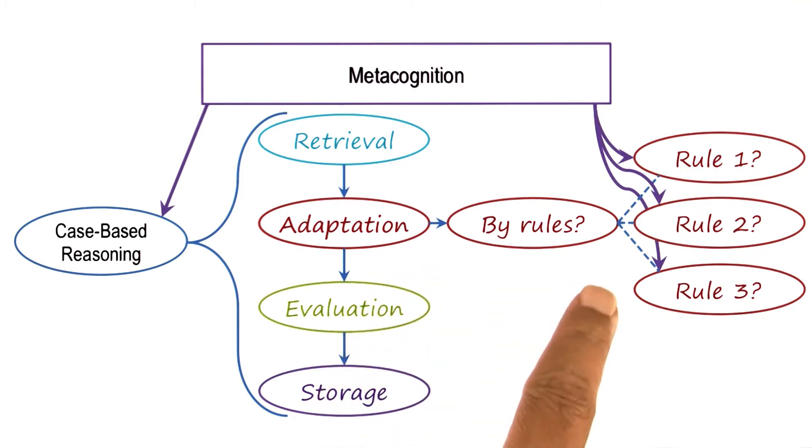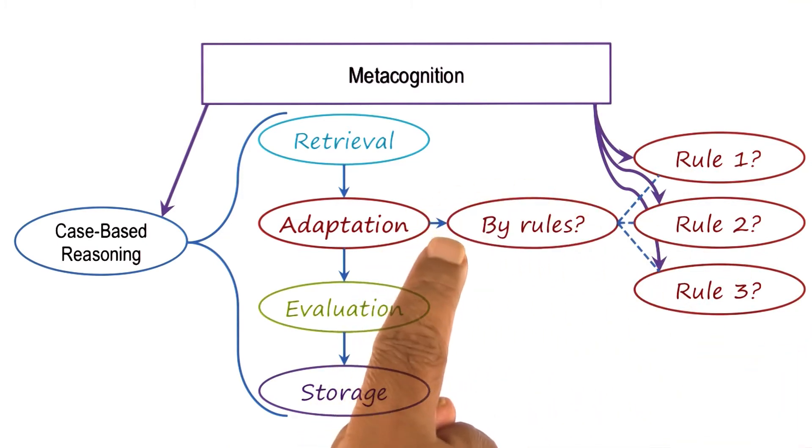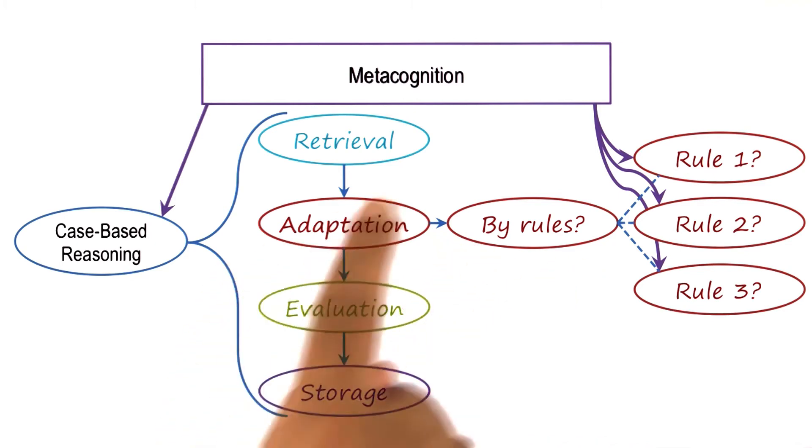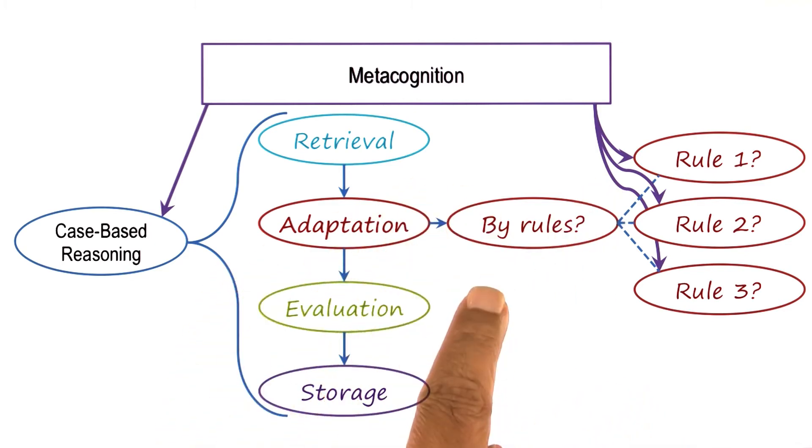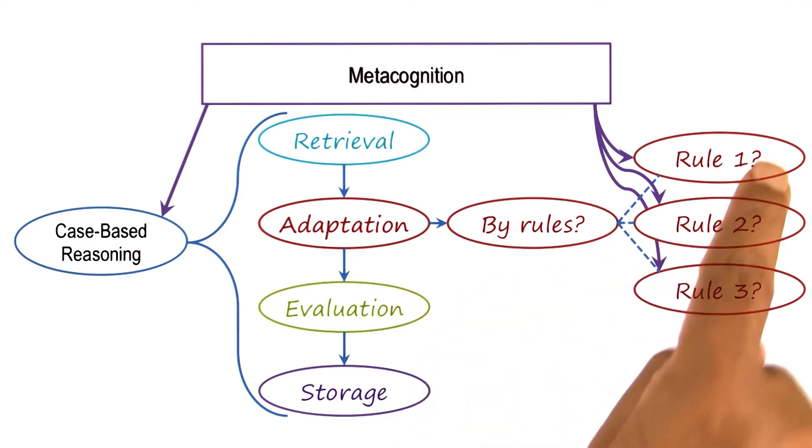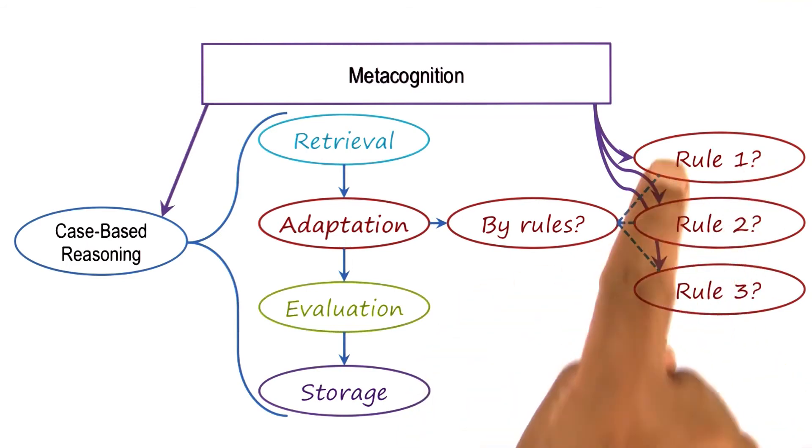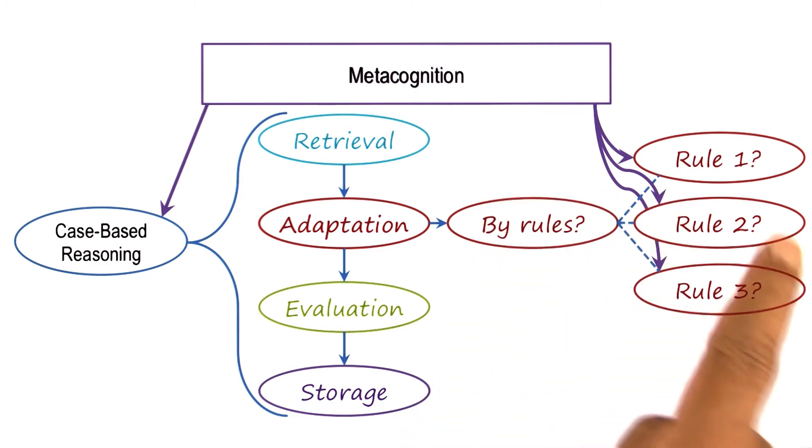We can also use a similar analysis at the next lower level. Suppose that metacognition decides to pick the method of rule-based reasoning for doing the case adaptation. Now the question becomes what rule to apply: rule one, two, or three? We can imagine meta-rules that select which rule to apply under the given condition.